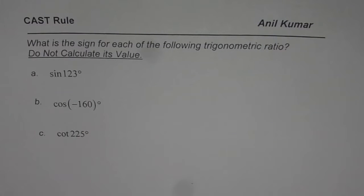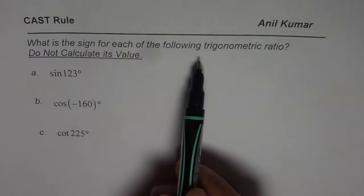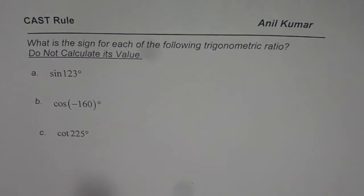I am Anil Kumar and now let us understand how to apply the CAST rule to find the sign of any trigonometric ratio. Question is, what is the sign for each of the following trigonometric ratio? Do not calculate its value. So we have three examples.